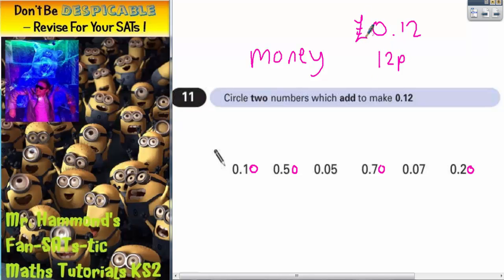So 0.12 pounds is 12 pence. So we think of these in terms of pence: 10 pence, 50 pence, 5 pence, 70 pence, 7 pence, 20 pence. Which two of them are going to make 12 pence?